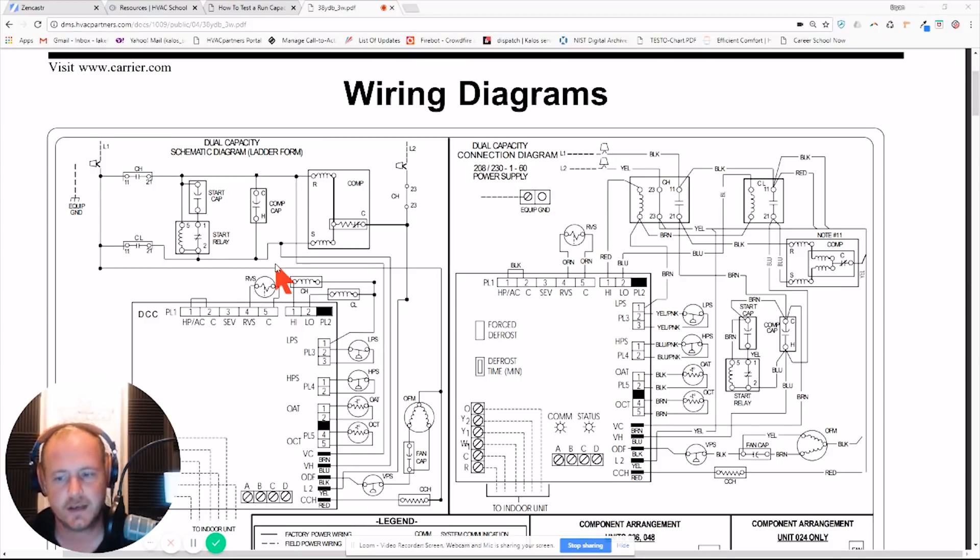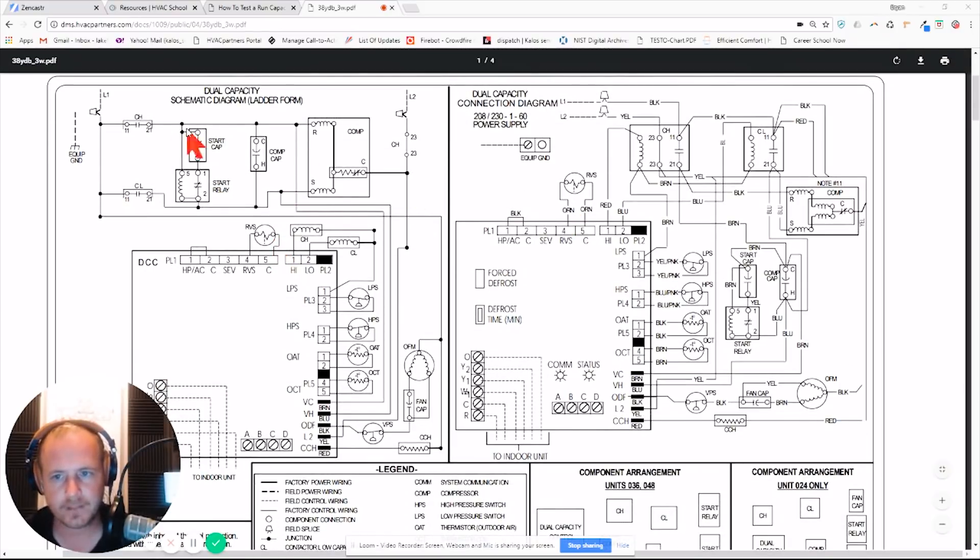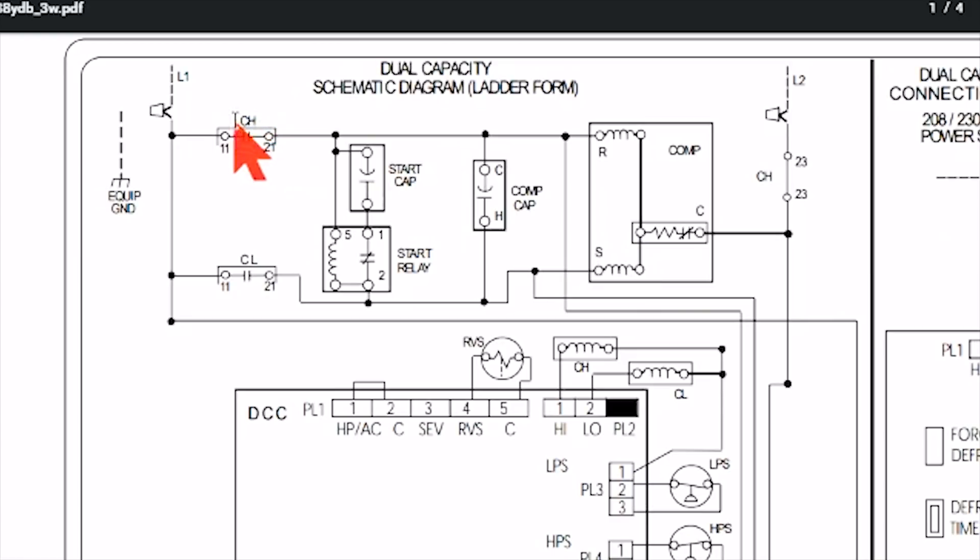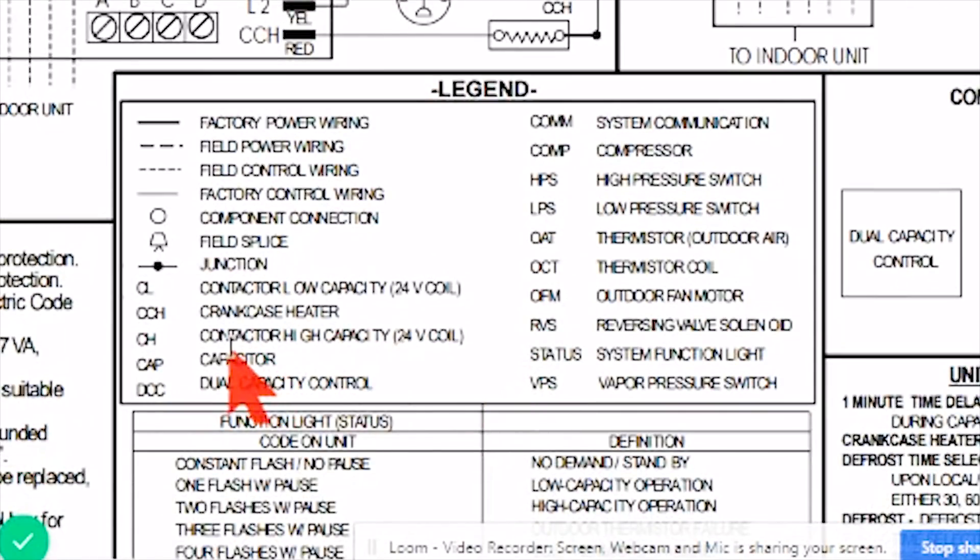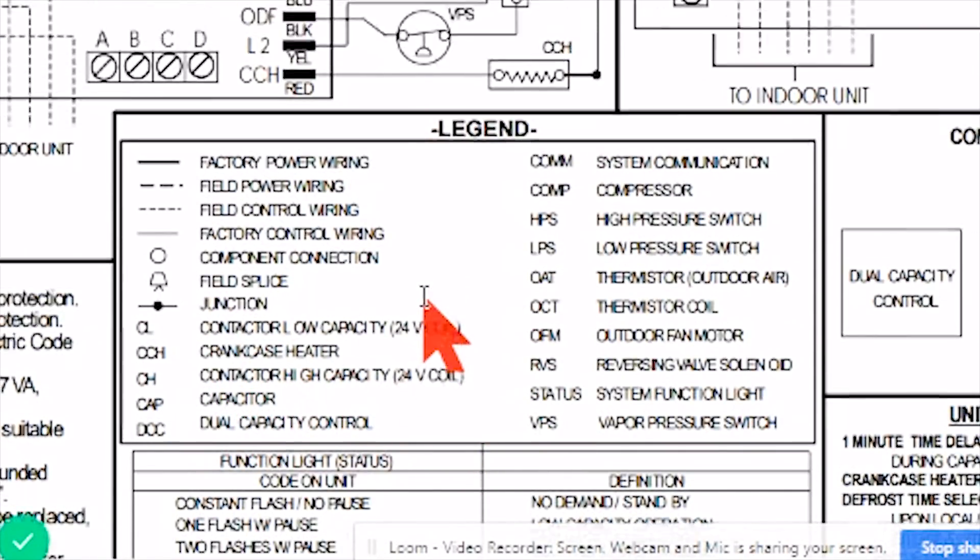But it's a very interesting thing that they've done, and so I want to use this opportunity to talk about how it's wired. If you look at this schematic, we've got an actual schematic diagram over here and then we have a connection diagram which actually shows how it's wired in real life. Two things I want to point out: this is CH—this is contactor high. If you look down here you can see it says contactor high capacity 24 volt coil and contactor low capacity 24 volt coil.